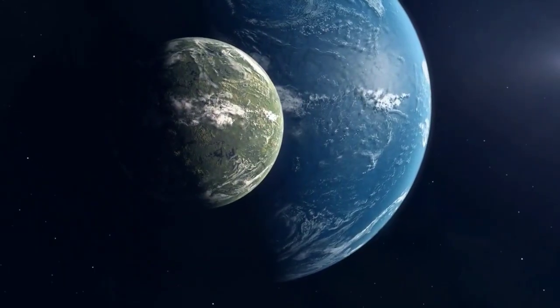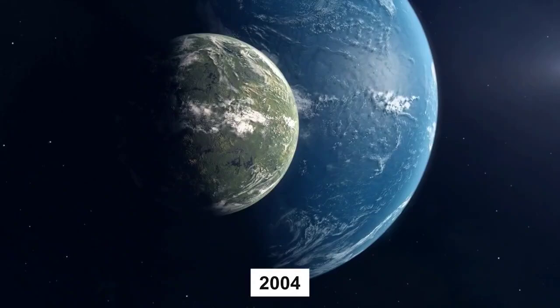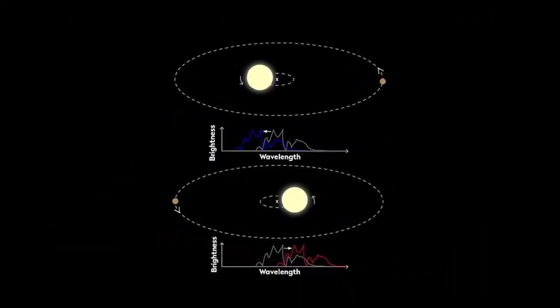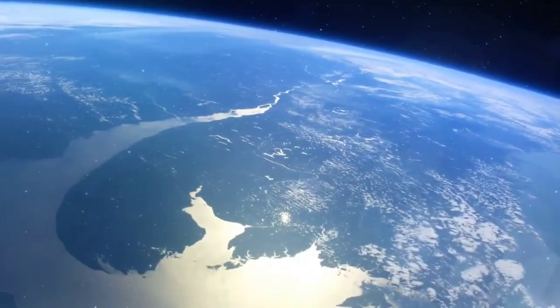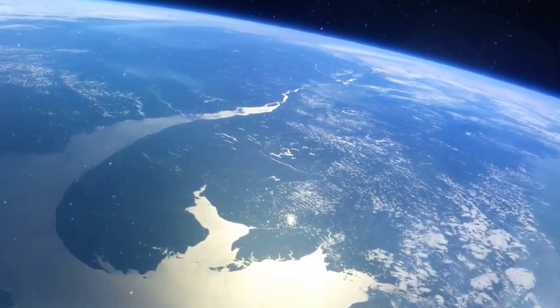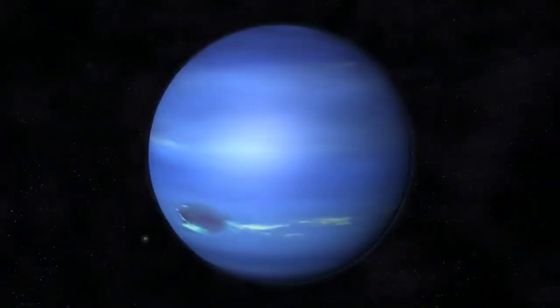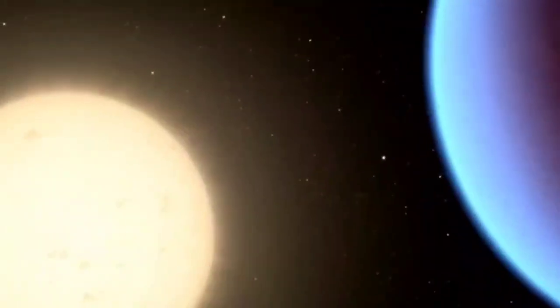This super-Earth, discovered in 2004 by a team of astronomers using the radial velocity method, which detects the wobbling motion of the star that is caused by the gravitational pull of its planets, is larger than Earth in both size and mass, but smaller than Uranus and Neptune. The estimated radius of 55 Cancri e is about twice that of Earth, while its mass is approximately eight times greater.